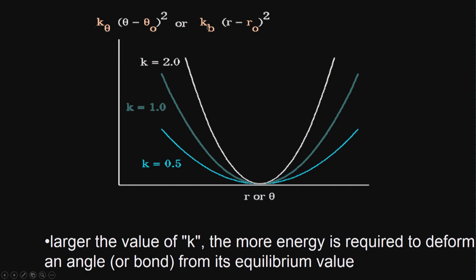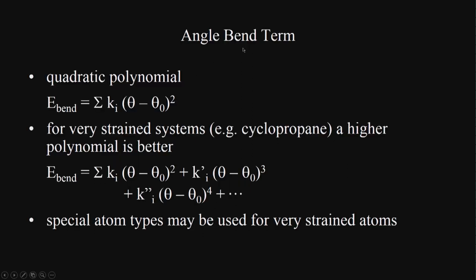You can change the value of k to get a shallow or steep quadratic curve. A larger value of k means more energy is required to deform an angle from its equilibrium θ0. For angle bending you can also go for a quartic form. For very strained systems like cyclopropane — a cyclic system with CH2-CH2-CH2 that is highly strained — special atom types may be used.